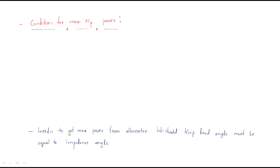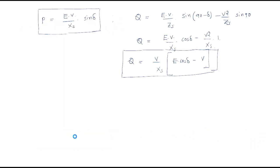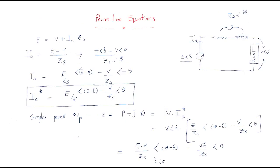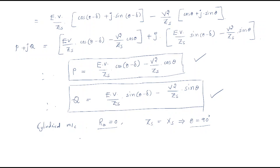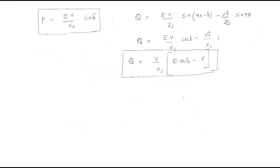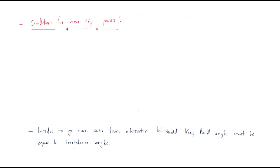Hello everyone. Up to now we discussed about the power flow equations in synchronous machines. We arrived at the active power equal to EV/Zs·cos(θ-δ) - V²/Zs·cosθ, and the reactive power equal to EV/Zs·sin(θ-δ) - V²/Zs·sinθ.